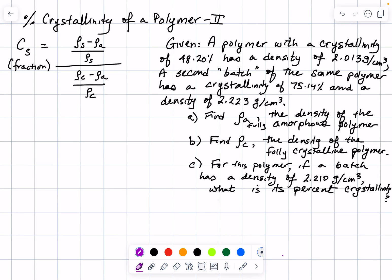In part two of this learning experience, we are given that a polymer of crystallinity 48.2% has a density of 2.013 grams per centimeter cubed, and a second batch of the same polymer has a second crystallinity and density. Our job is to find the density of the fully amorphous polymer, the density of the fully crystalline polymer, and then calculate the percent crystallinity for another batch with a density of 2.210 grams per centimeter cubed.